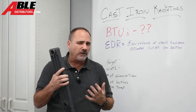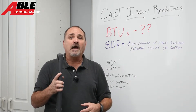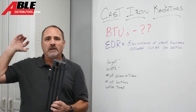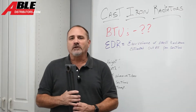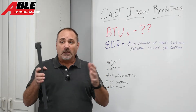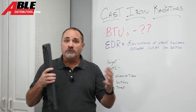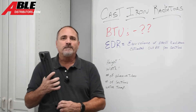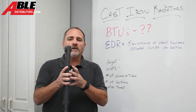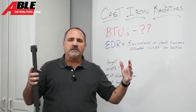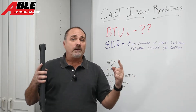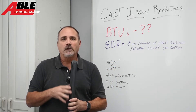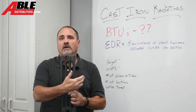Another situation where you really want to know the BTUs a radiator can put out: let's say they changed the room and instead of having one window they put in a wall of windows, and now that room is starting to get a little chilly. You might want to play with water temperature — in the chart you can see what different water temperatures do to the BTU output of a cast iron radiator — or you might say, if I added a few more sections, how many more BTUs could I get? Maybe with the pipes coming up through the floor you can't go wider, but maybe you can go taller or deeper.